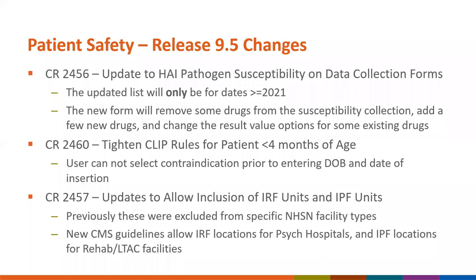CR2456 is an update to all HAI pathogen susceptibility on the data collection forms. Some drugs will be removed and some new drugs will be added to the susceptibility collection, as well as a change in the result value options for existing drugs. This updated list will only be for dates equal to or greater than 2021. This CR affects dialysis, patient safety, and long-term care. CR2460 is to tighten CLIP rules for patients less than four months old—contraindication will not be selectable prior to entering the date of birth and date of insertion. CR2457 is based on new CMS guidelines; NHSN will allow inclusion of IRF and IPF units, which were previously not allowed from specific NHSN facility types.